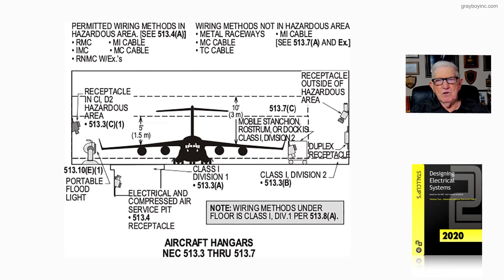Looking at 513.3e, you'll review mobile stanchions, roost rooms, and docks. These are Class 1 Division 2 because they're portable — you can roll them in and out, they're flexible, and you can connect to them and provide power. You can also bring in portable floodlights under 513.10e1. A sniffer can detect if the area has a hazardous mixture of gas and vapors.